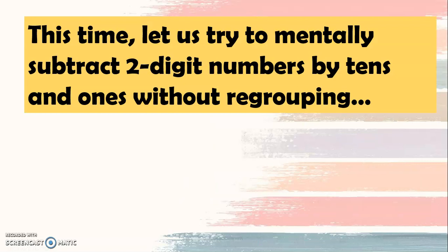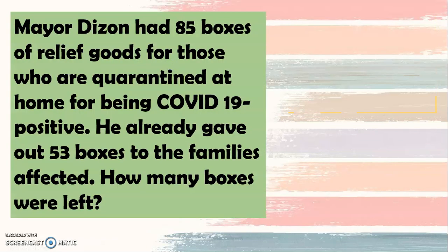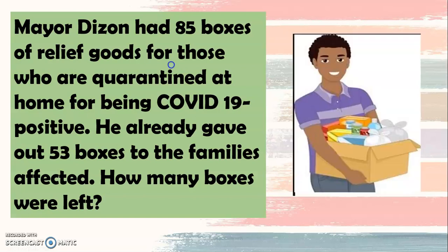This time, let us try to mentally subtract two-digit numbers by tens and ones without regrouping. Mayor Dizon had 85 boxes of relief goods for those who are quarantined at home for being COVID-19 positive. He already gave out 53 boxes to the families affected. How many boxes were left?